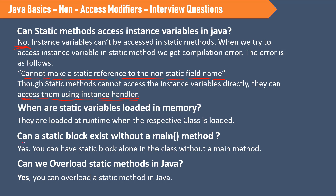Can a static block exist without a main method? Yes, we can have a static block without a main method. Can we overload static methods in Java? Overloading means having two methods with the same name but with different parameter types. Static methods can also be overloaded — we can have two static methods with the same name and different parameter types. So yes, you can overload a static method in Java.